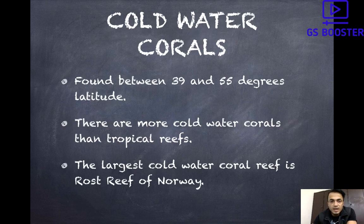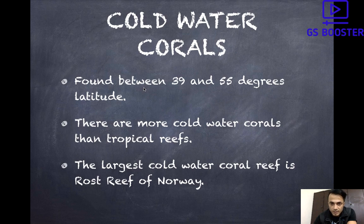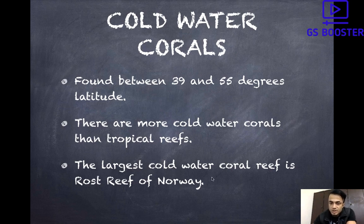Recently, cold water corals have also been observed quite frequently — they are different from tropical corals. Cold water corals are found between 39 to 55 degrees latitude, mostly in the northern hemisphere, though some are found in the southern hemisphere too. There are more cold water coral species than tropical reef species. Just as the largest tropical coral reef is the Great Barrier Reef in Queensland province, Australia, the largest cold water coral reef is the Røst Reef of Norway. UPSC may ask questions on cold water corals in coming years, so that should definitely be known to you.